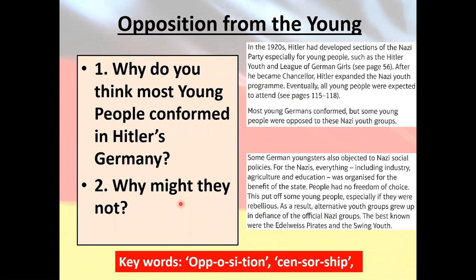When it came to young people, how did Hitler go about controlling them? We'll come back to the youth later in more detail. In the 1920s, Hitler developed sections of the Nazi Party specifically for young people — the League of German Girls and the Hitler Youth.